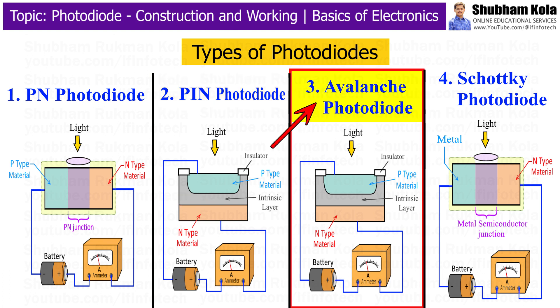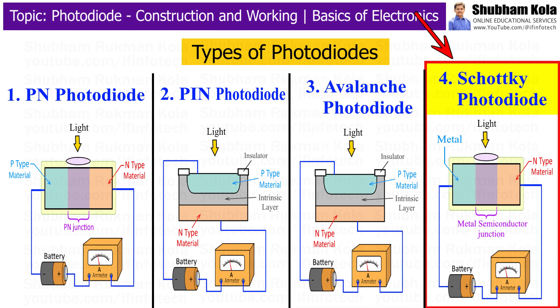The third type is the avalanche photodiode. This type operates at high reverse bias and uses the avalanche effect to multiply the generated electron-hole pairs. It is very sensitive and can detect very low levels of light. The fourth is the Schottky photodiode, which uses a metal-semiconductor junction instead of a p-n junction. It has a very fast response time and is used in high-speed applications.